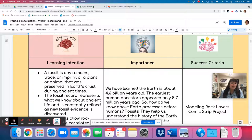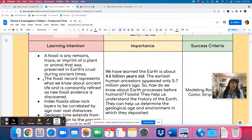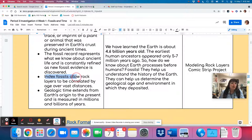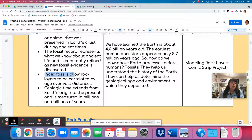What are we learning about this week? A fossil is any remains, trace, or imprint of a plant or animal that was preserved in Earth's crust. The fossil record represents what we know about ancient life and is constantly refined. Index fossils allow rock layers to be correlated by age over vast distances, and geological time extends from Earth's origin to the present and is measured in millions and billions of years.